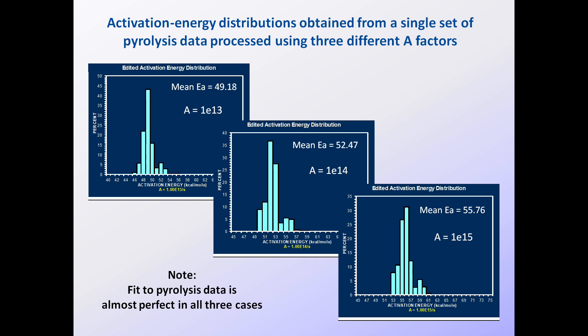Here we see activation energy distributions obtained using our ORFA software from a single pyrolysis run processed using three different A factors. EA spacing was set to one kilocalorie for all three. A factors are 1E13, 1E14, and 1E15.